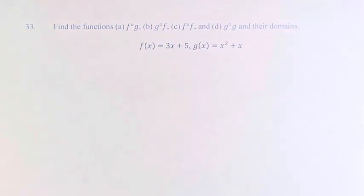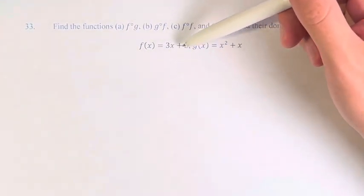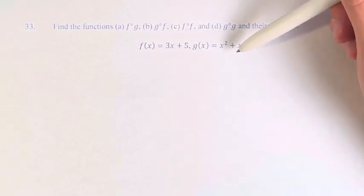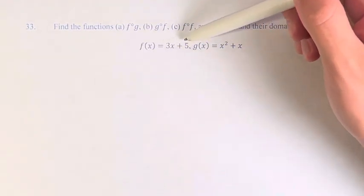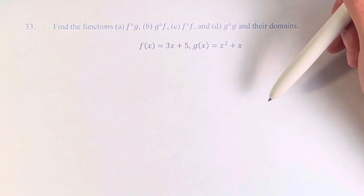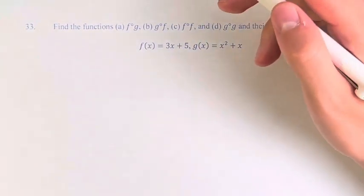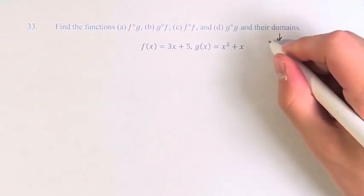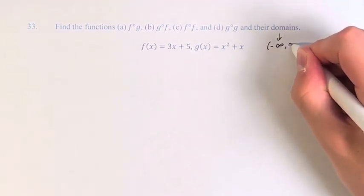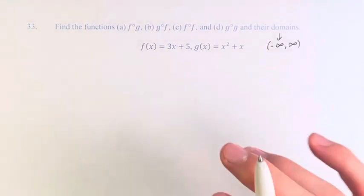So before we even start, we can see that we have two polynomials here. Their domains are all real numbers, and their composition is going to be therefore all real numbers. So we can just say that the domain for all of these is going to be from negative infinity to infinity. But let's continue here.